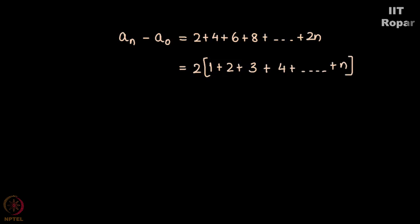I can take out 2 common, so what remains is 1 + 2 + 3 + 4 + ... + n. From mathematical induction we saw that sum of n terms is n(n+1)/2. So this can be written as 2 × n(n+1)/2. Canceling 2 on numerator and denominator I get n(n+1). A0 is 0, so An = n(n+1).